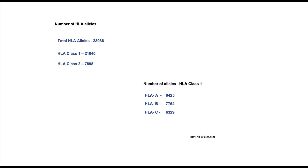Another important aspect of diversity in this system is that HLA class 1 and class 2 genes are highly polymorphic — meaning a large number of different alleles of these genes are present. However, this polymorphism is at the population level, as an individual can only have a limited number of HLA class 1 and class 2 alleles.